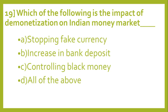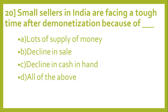Question number 19: Which of the following is the impact of demonetization on the Indian money market? Options: A: Stopping fake currency. B: Increased bank deposits. C: Controlling black money. D: All of the above. And the correct answer is D, All of the above.